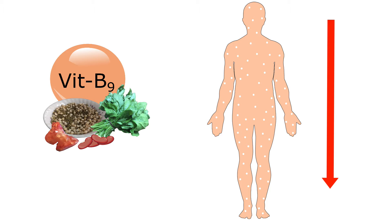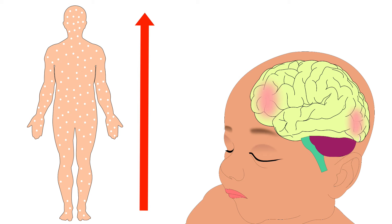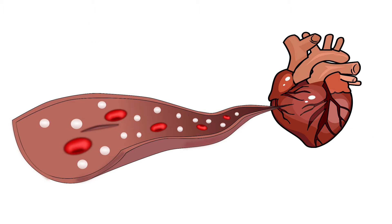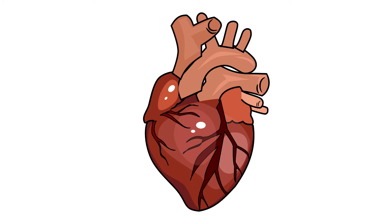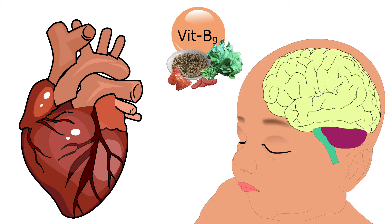Folate helps in lowering homocysteine levels. Homocysteine is a type of amino acid used to make protein. High homocysteine levels impair cognitive function and damage the blood vessels of the heart, increasing the risk of heart diseases. Thus, folate helps in maintaining heart and cognitive function.